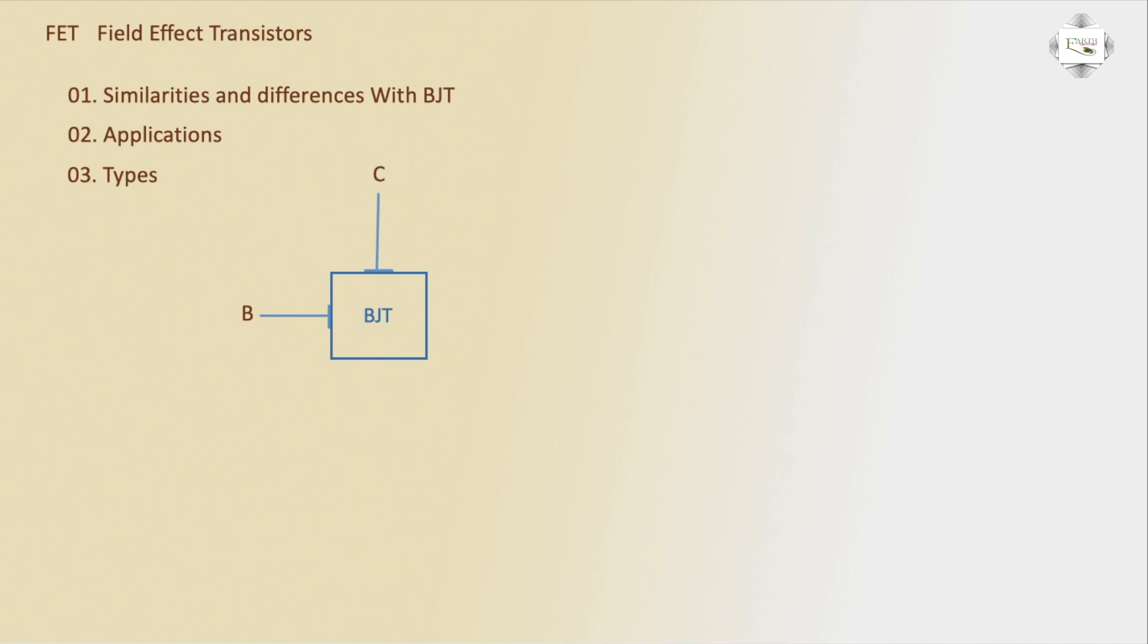Second terminal is collector, third terminal is emitter. BJT transistor has three terminals. IB current flows in the base terminal.